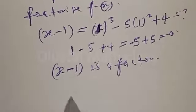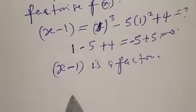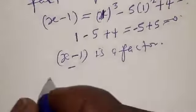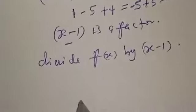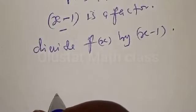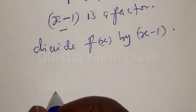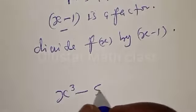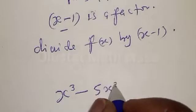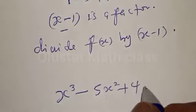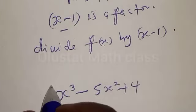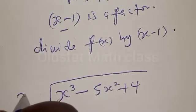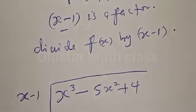Now let's divide f of s by s minus 1. We have f of s equal to s³ minus 5s squared plus 4. Let's use the polynomial long division method with s minus 1.